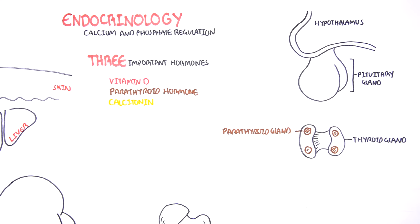The first hormone we will concentrate on is parathyroid hormone, but before that we need to understand the significance of calcium and phosphate in the body. We regulate these levels because calcium is important for muscle contraction and nerve conduction, while phosphate is important for biochemical processes as well as energy.